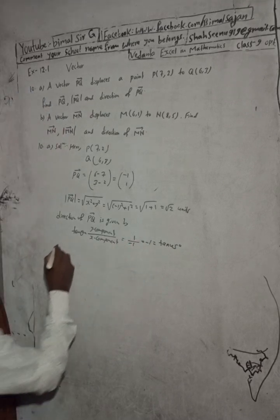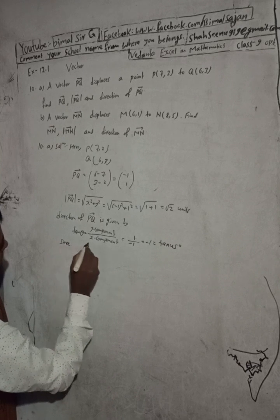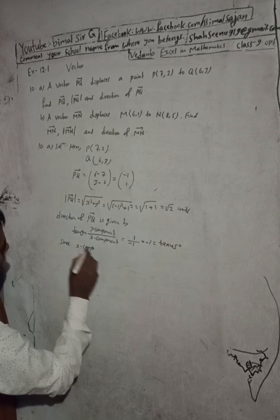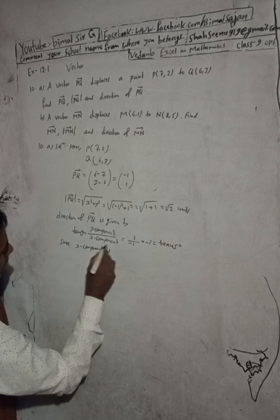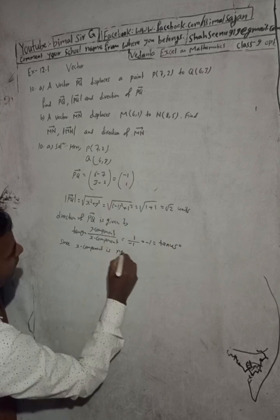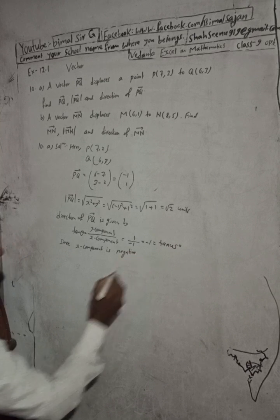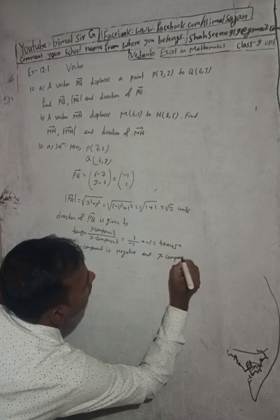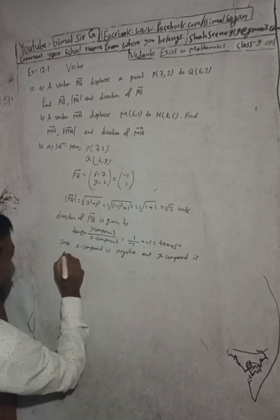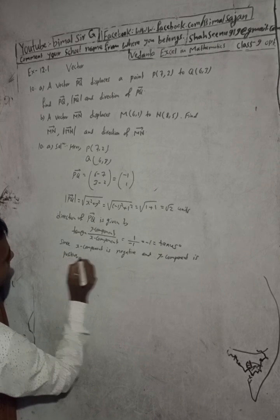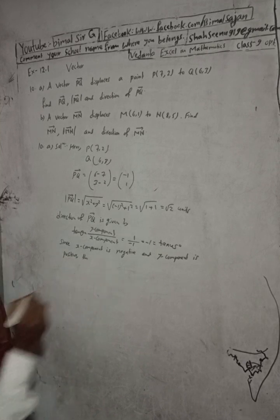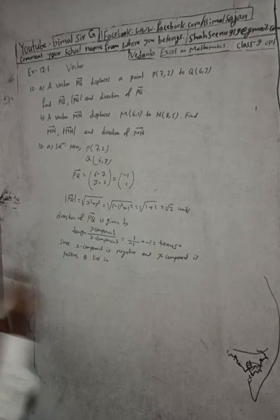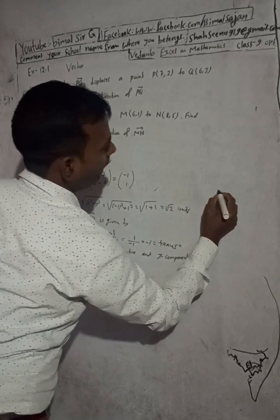Since the x-component is minus 1 and the y-component is positive 1, we use the CAST rule to determine which quadrant theta lies in.